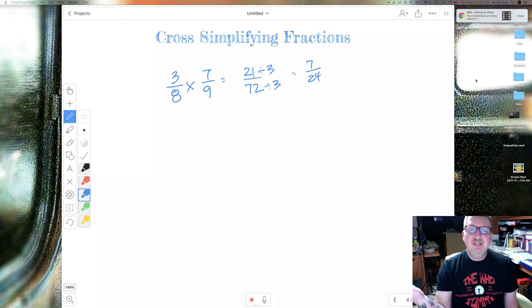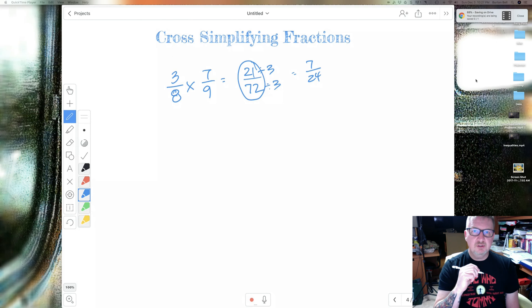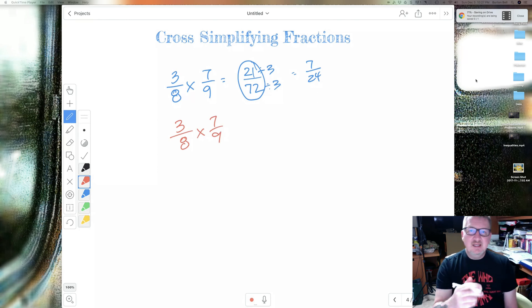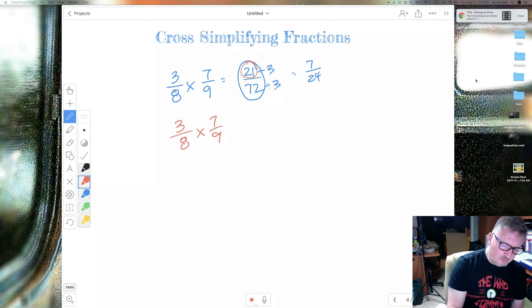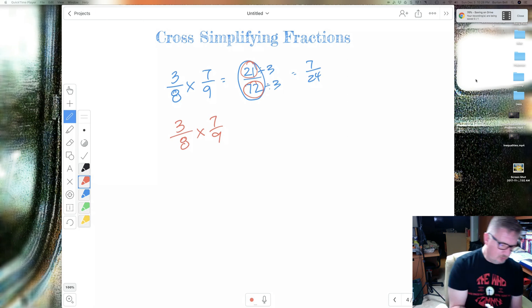Now, there's an easier way to do it, so I don't have to deal with these big numbers. And that's what I want to show you today. I'm going to rewrite this. I'm going to say 3 over 8 times 7 over 9. Now, I can simplify, just like I simplified the numerator here with the denominator here, I can simplify the numerator from one fraction with the denominator out of another fraction, only when I'm multiplying. So let me show you what that looks like.